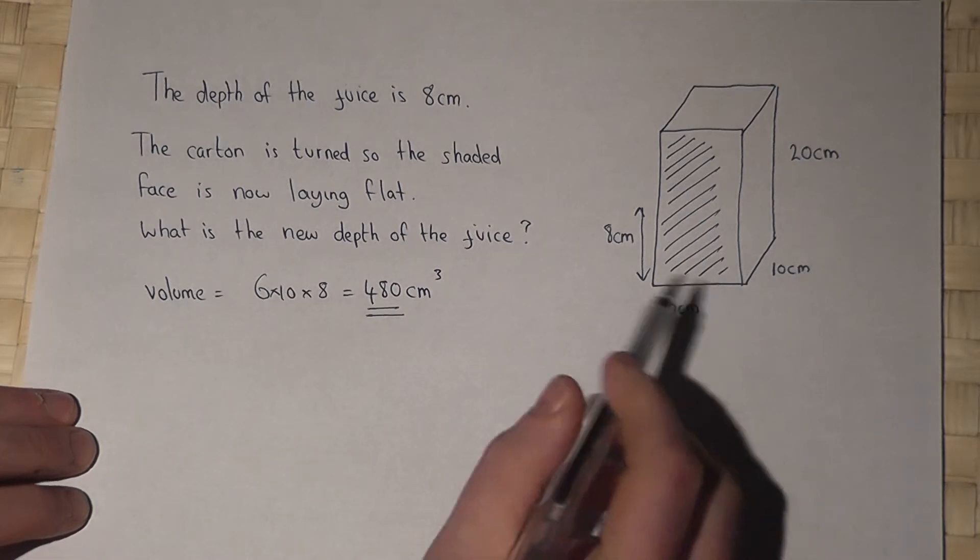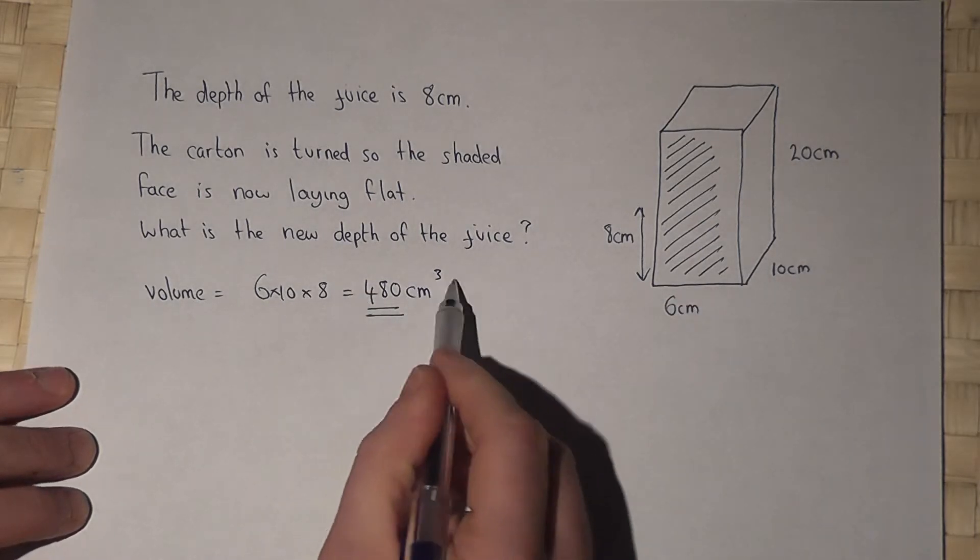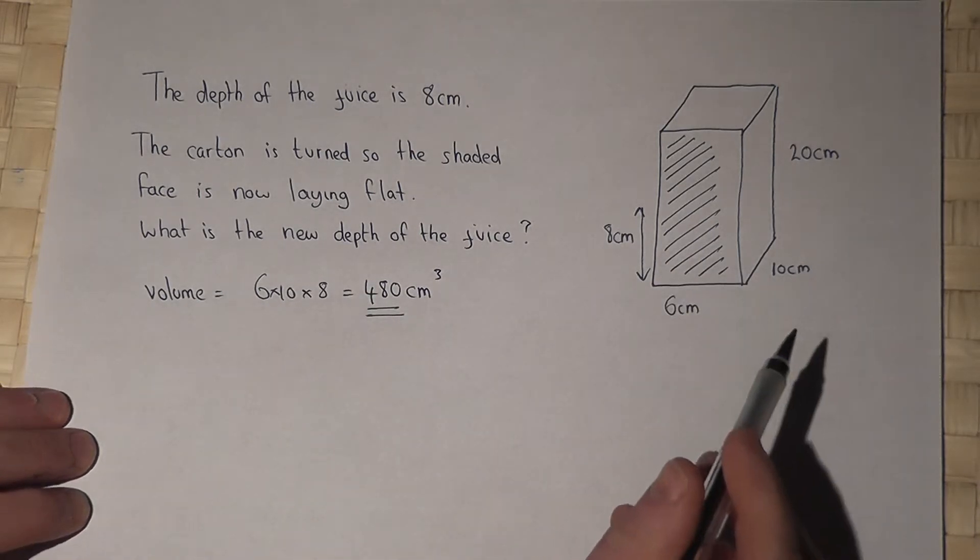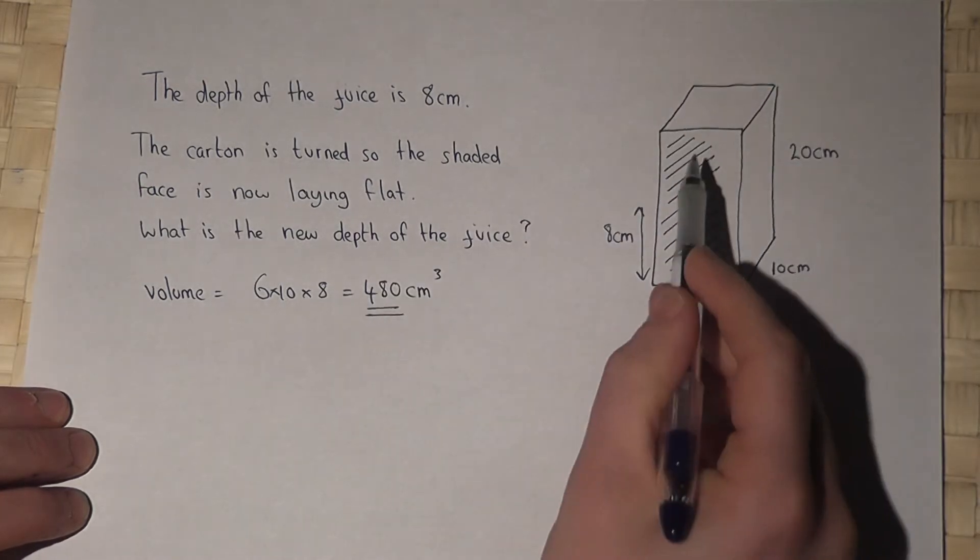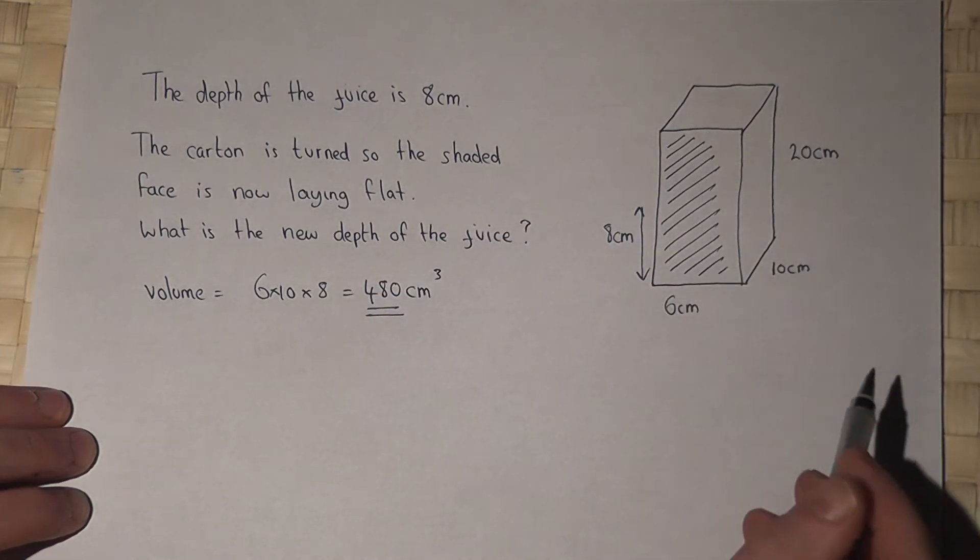So in the carton there's 480 centimetres cubed of juice. Now suppose this carton is turned over so the shaded area now lies flat on the table.